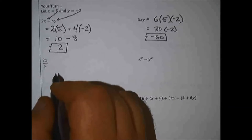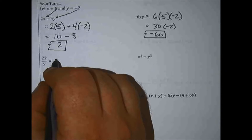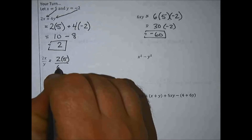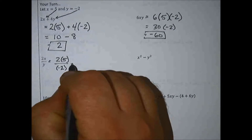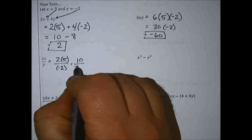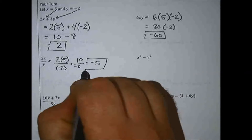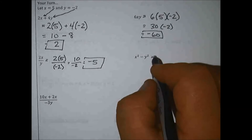Next one: we have 2 times x divided by y. Two times x means 2 times 5, and y is negative 2. A lot of times when I'm evaluating I do put parentheses around those numbers just to remind myself that is a number I put in, not the problem. Two times 5 is 10, divided by negative 2 — ten divided by negative 2 is negative 5.